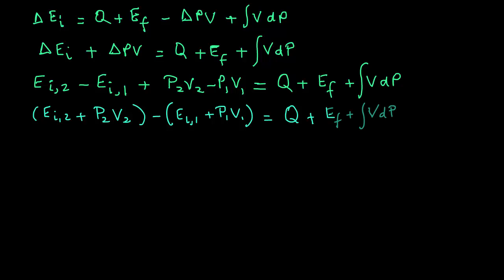Note that E plus PV is also expressed, based on thermodynamics, as H or the enthalpy of the system. So we can then write the left hand side as H2 minus H1, so that's the difference in enthalpies between the initial and the final states, equals Q plus EF plus integral VdP.